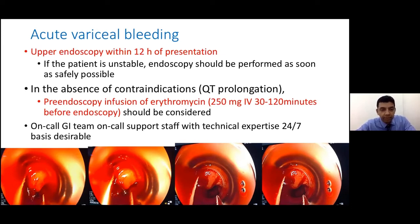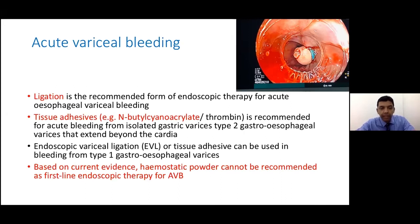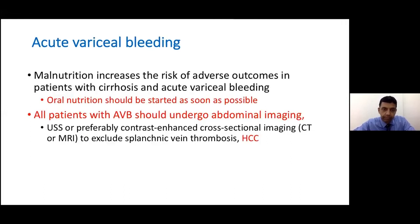Pre-endoscopy erythromycin is helpful to give a clear view, and ideally we should have a 24-hour team able to handle such cases. We should treat with band ligation — it is very important to find the site of bleeding and place a band there. For fundal varices, for IGV-2 type you can consider ligation or tissue glue, and there is a new option of haemospray which is used in Sri Lanka, but it cannot be recommended as first-line therapy according to Baveno 7.